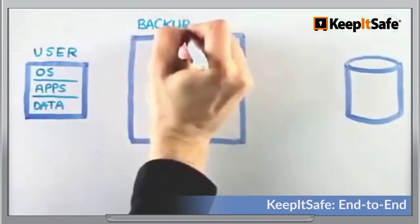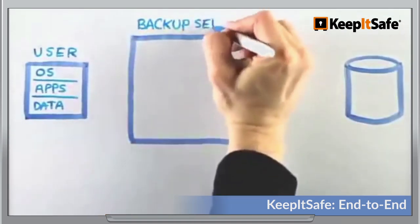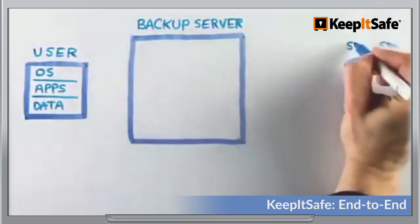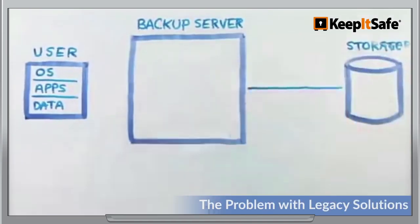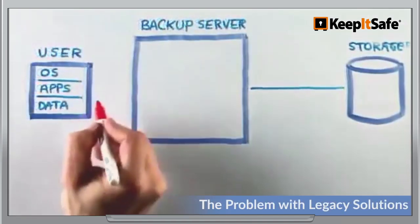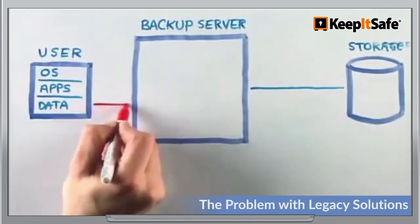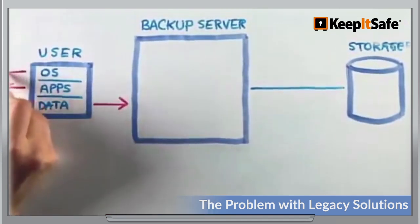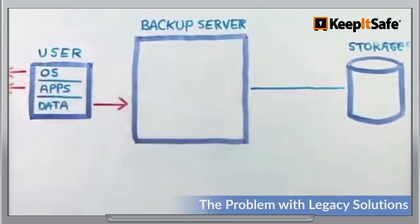Let's take a look at the end-to-end, ups and downs and ins and outs of how we achieve this. The problem with legacy solutions is that they treat the OS, applications and the data as separate entities, when in fact they live together on our computers for a reason. They need each other in order to function.